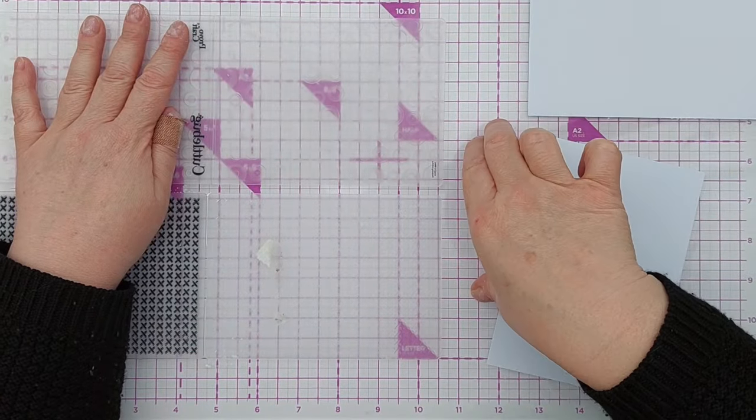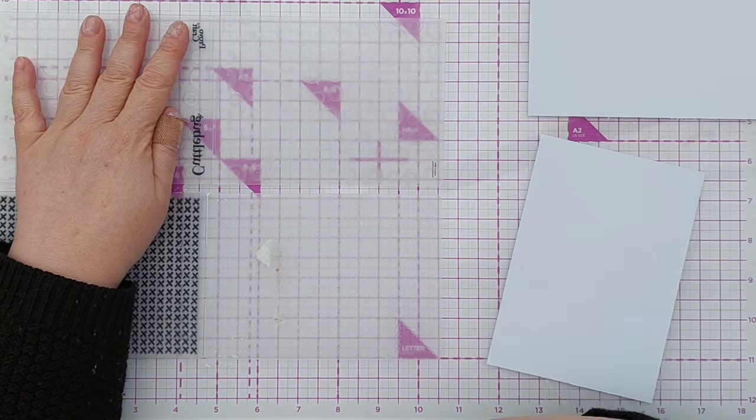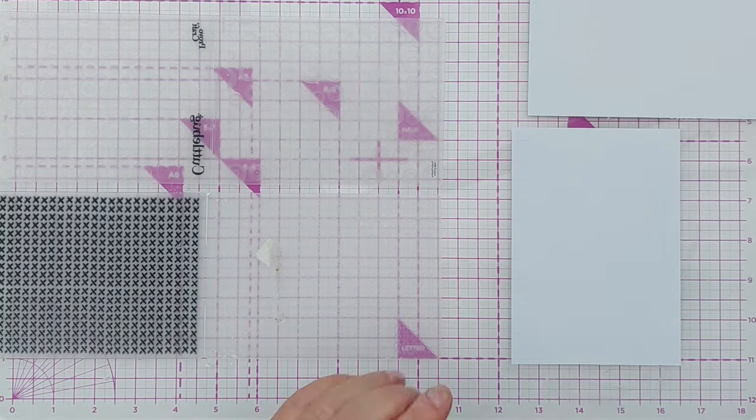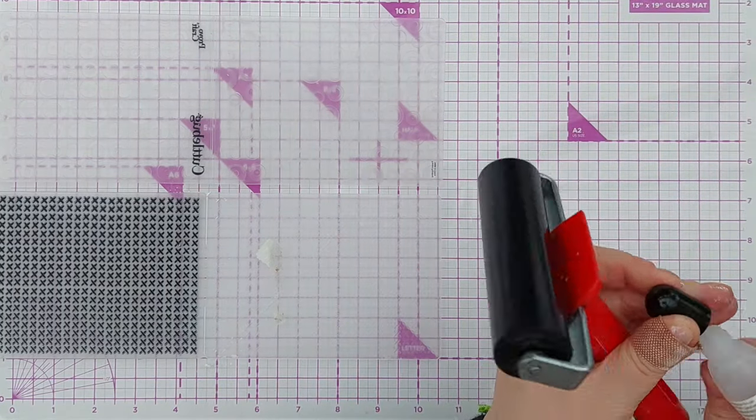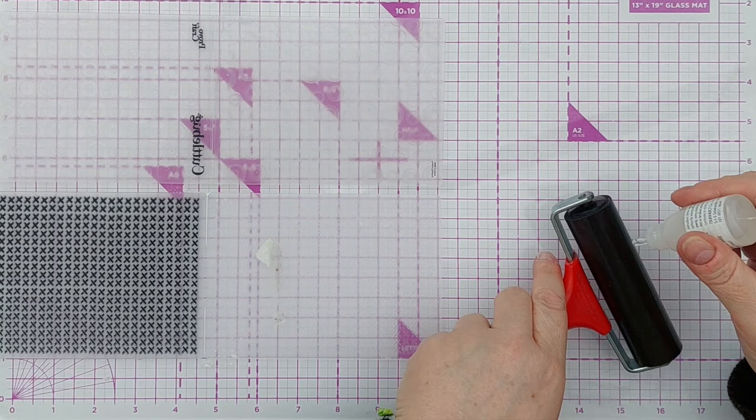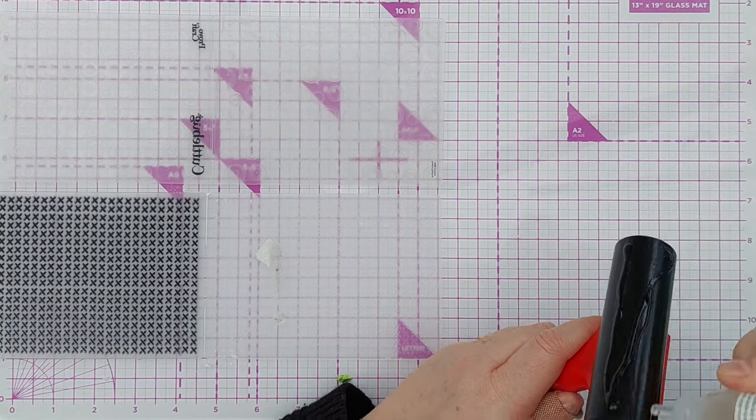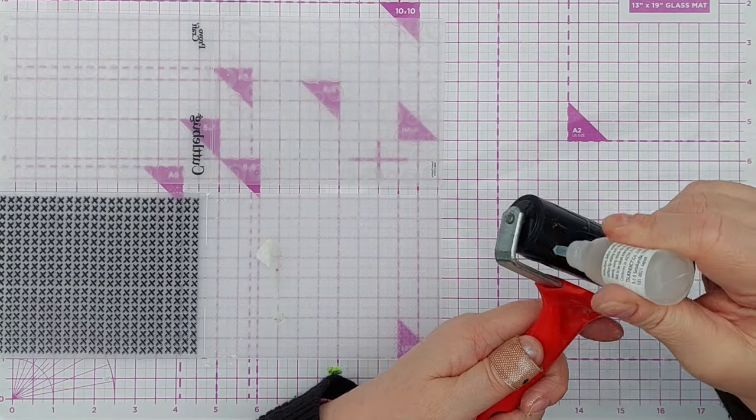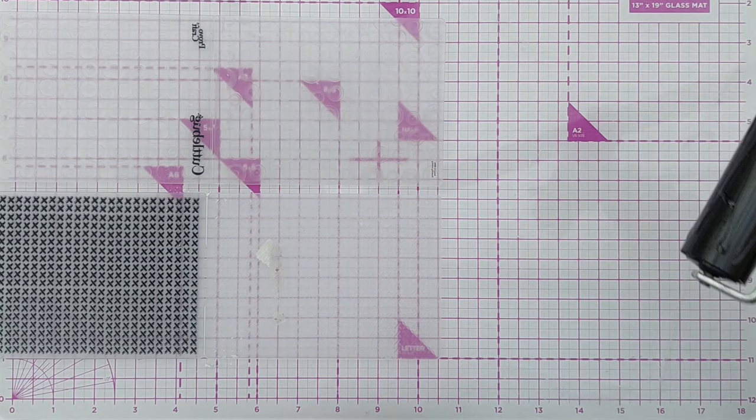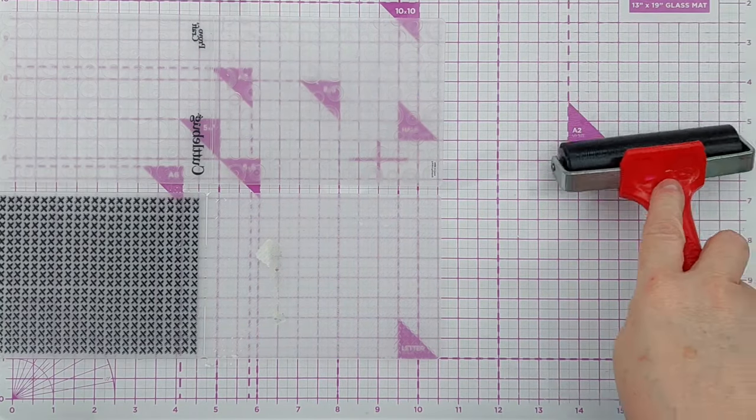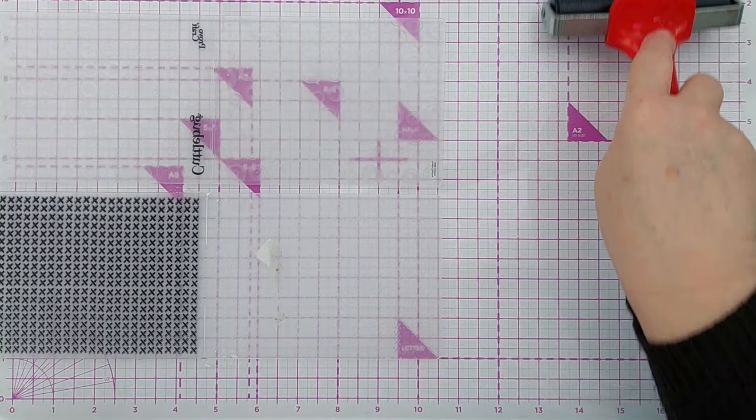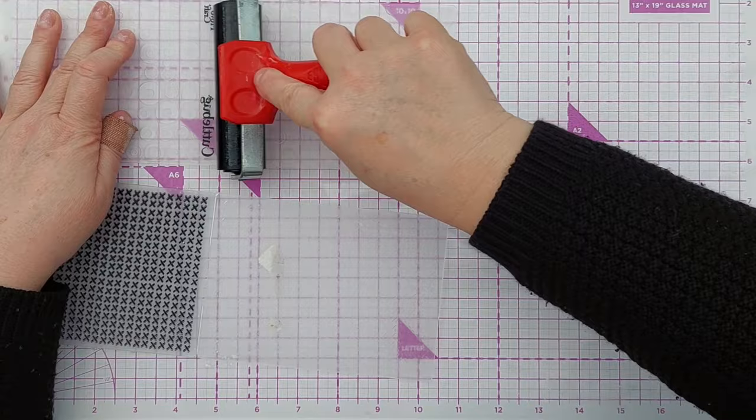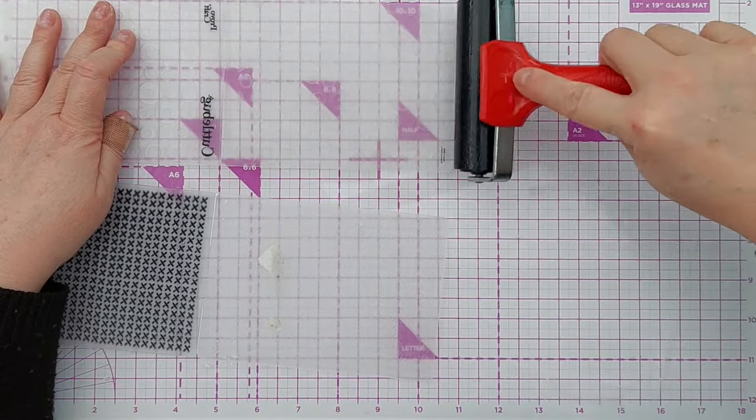This side of my embossing folders is where the pattern is raised, so I'll get a debossed pattern. I'm going to ink my brayer up with Versamark embossing ink. I'll roll it around until my brayer is evenly coated and run that across this raised pattern on both embossing folders.